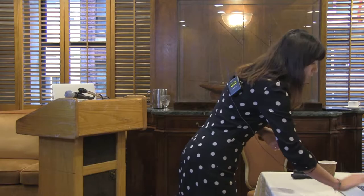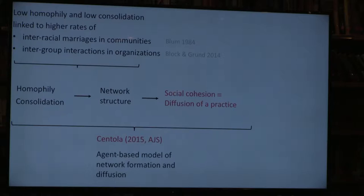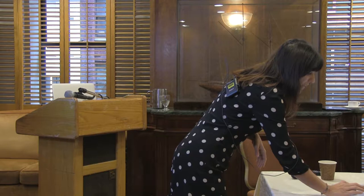Santola used an agent-based model of network formation and diffusion with synthetic agents, controlling the distribution of attributes to control consolidation. In a high-consolidation scenario, if you're high on one attribute, you're high on all others. In a different setting, your position on one social dimension does not affect your position on others. He also gave agents rules for associating with one another to control homophily—in one setting randomly, in another picking similar people. The network structure looked quite different under these scenarios.